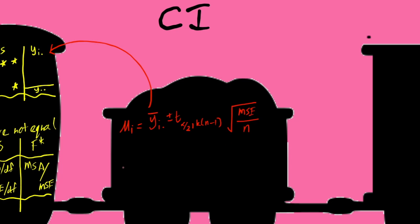multiplied by the mean square error divided by the number of observation. And if we want to find the confidence interval for the difference between two means, for example mu I minus mu J, we take the values of Y bar I dot minus Y bar J dot plus minus D alpha over 2 N minus K multiplied by 2 MSE over the number of observation.